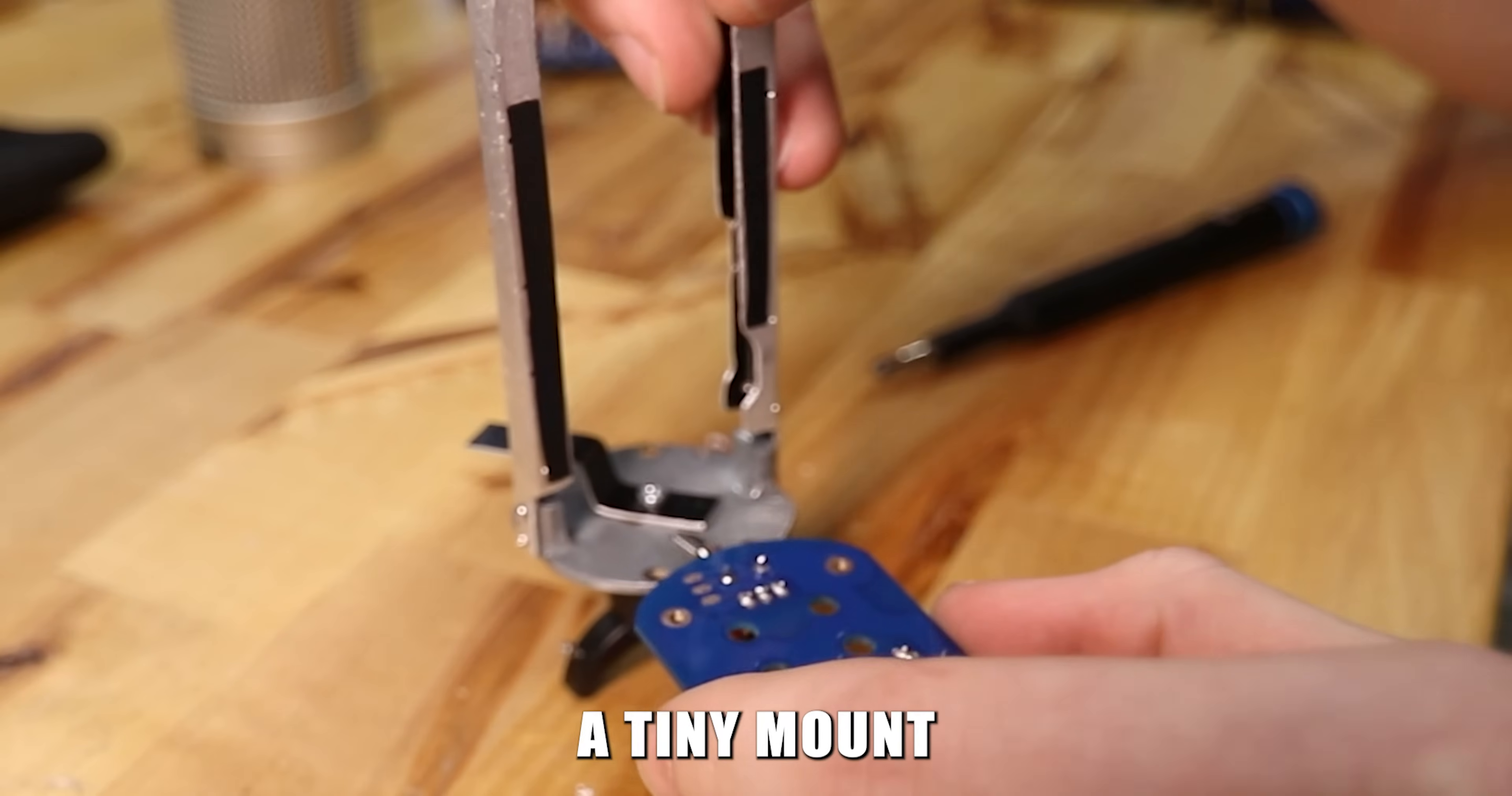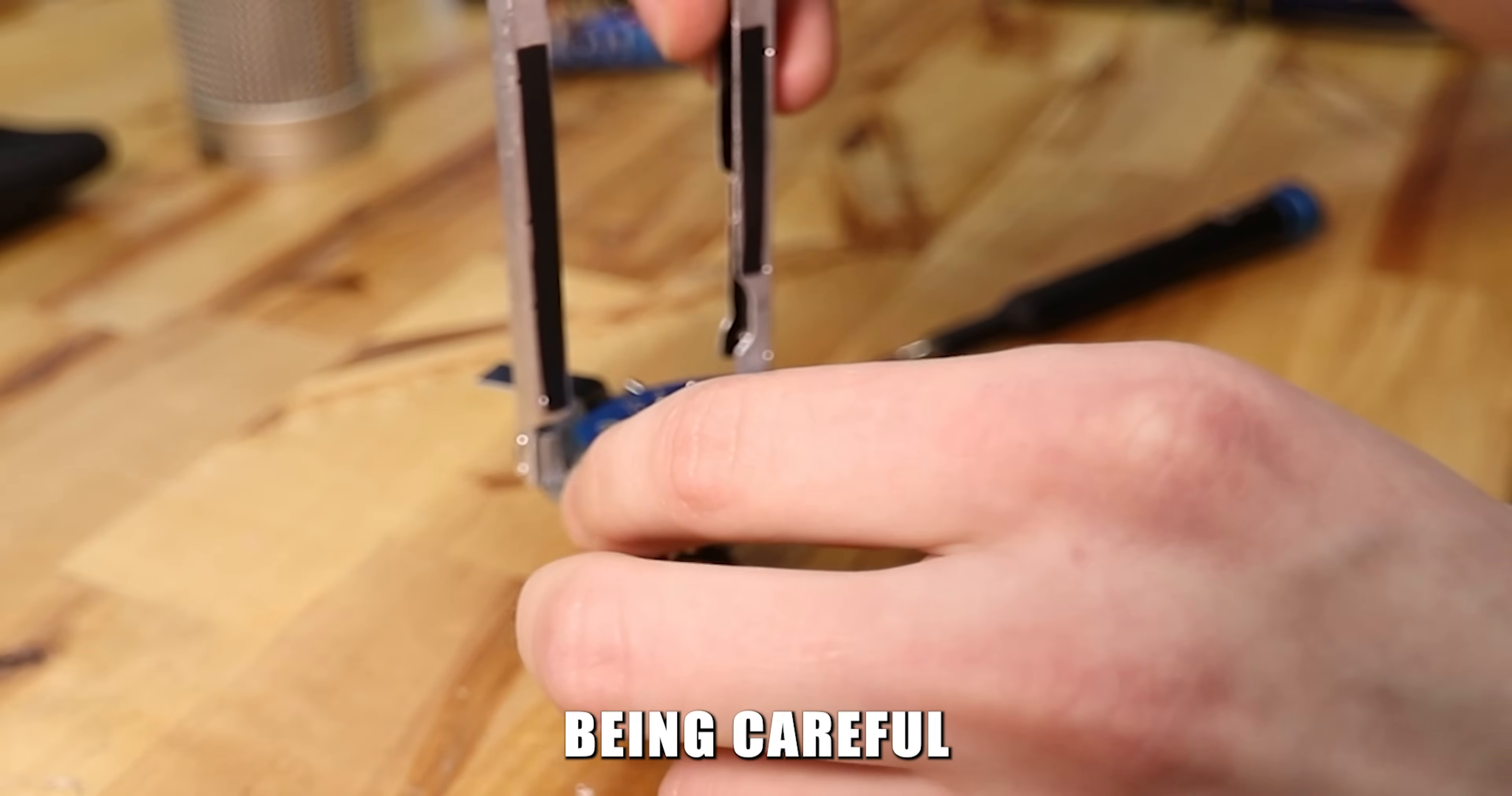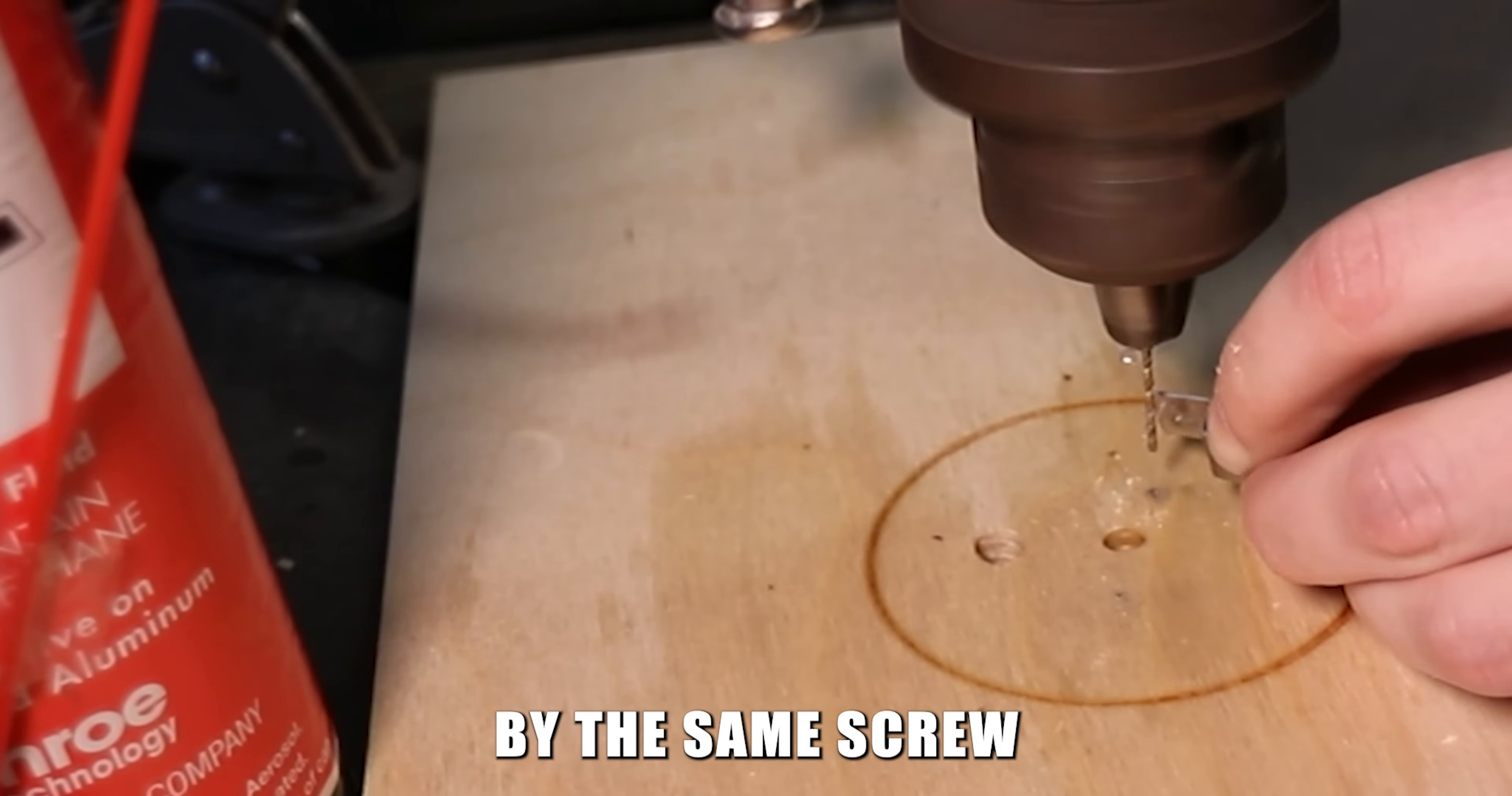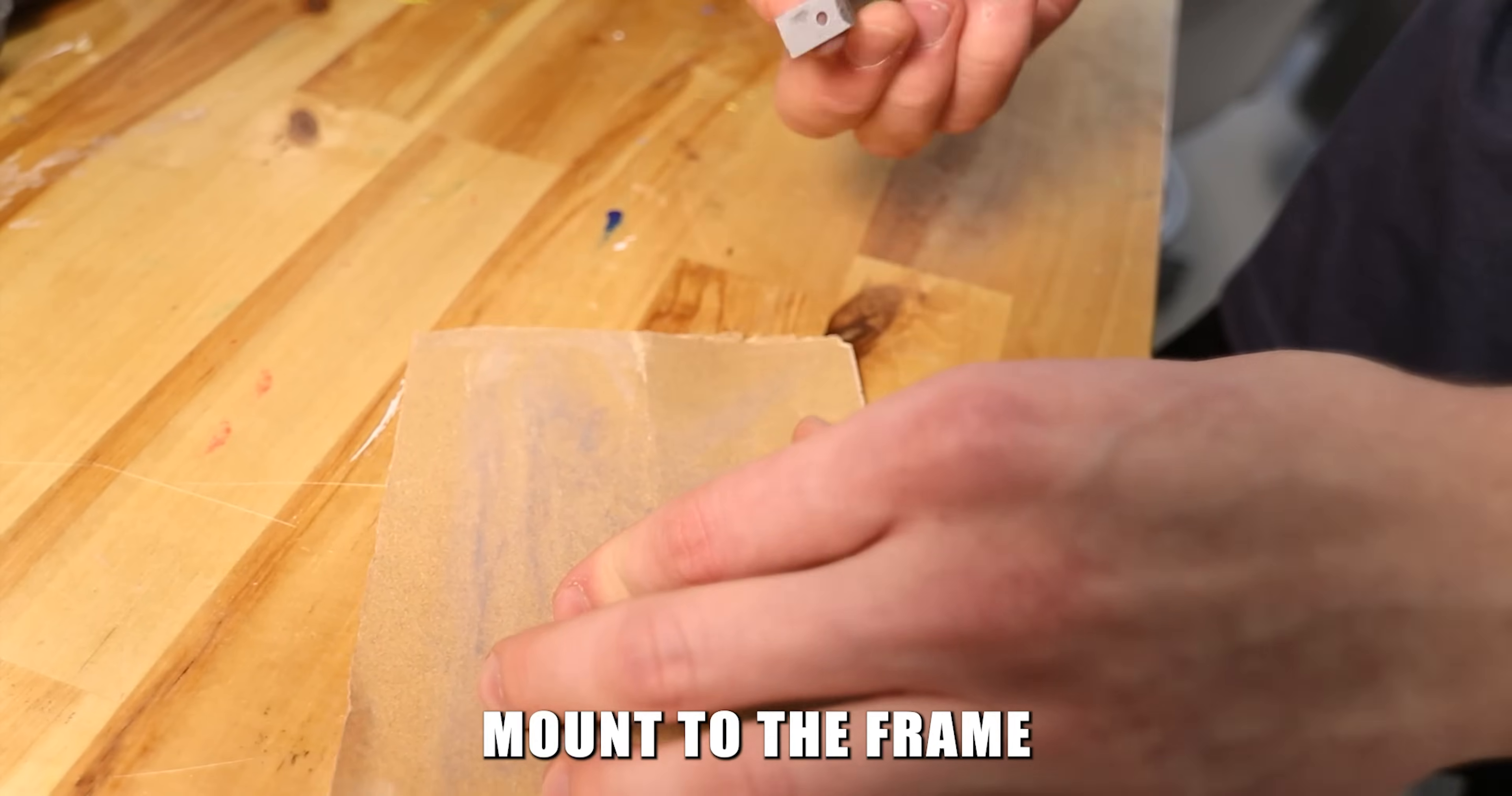Now I had to fabricate a tiny mount for the Switch PCB, being careful not to block any of the headbasket screws. This mount is attached by the same screw that holds the capsule mount to the frame.